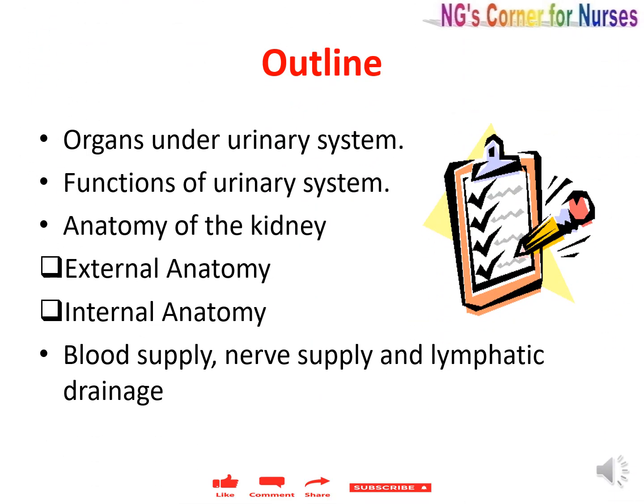In this video, we will cover the names of the organs under the urinary system, then the overall functions of the urinary system, then the anatomy of the kidney — including its external anatomy, internal anatomy, blood supply, nerve supply, and lymphatic drainage.